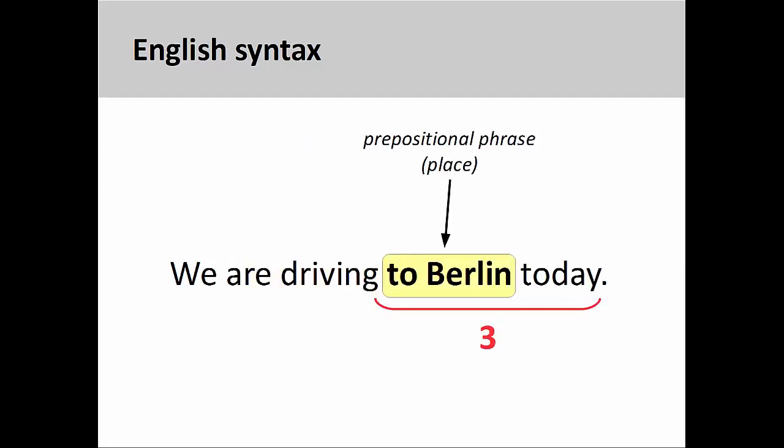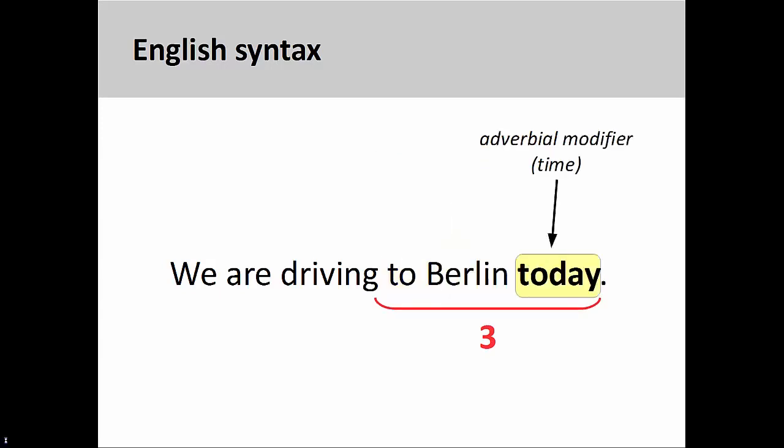Additional information is usually presented as prepositional phrases or adverbial modifiers after the verb in a third position. Here the prepositional phrase 'to Berlin' describes the place to where the subject is driving. And here, also in the third position, is the adverbial modifier describing the time when this activity will take place.